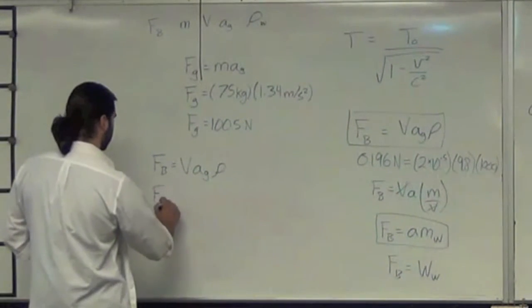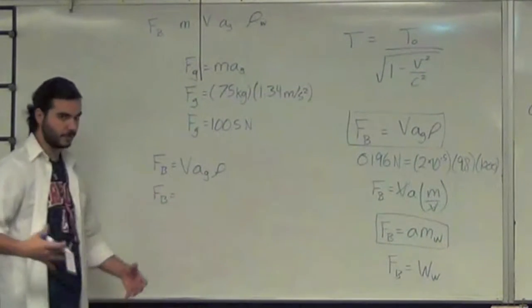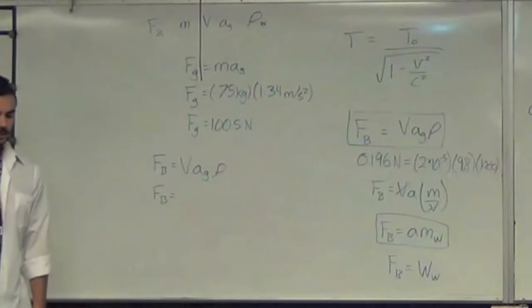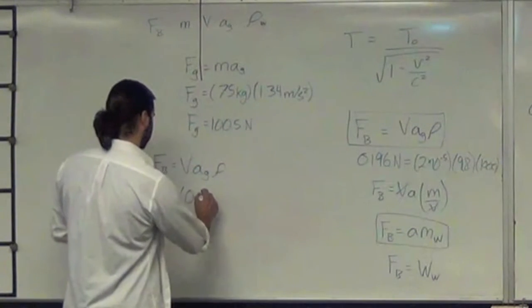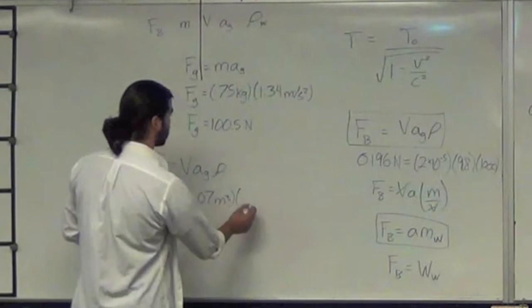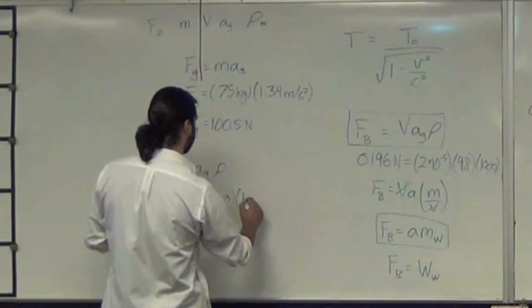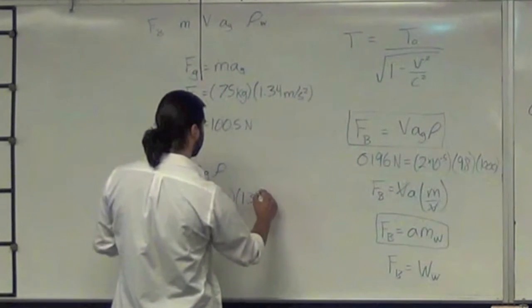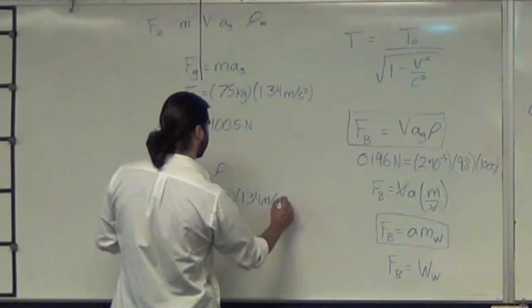So, in this case, my volume is roughly 70 liters, 0.07 cubic meters. Acceleration due to gravity on Titan is 1.34 meters per second squared.